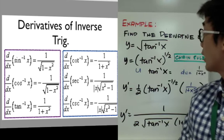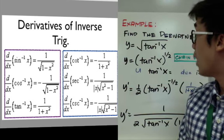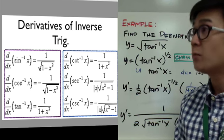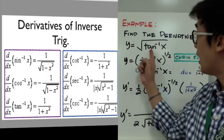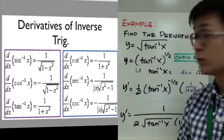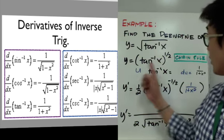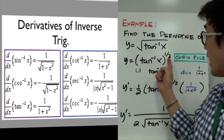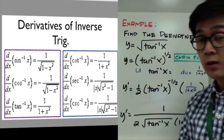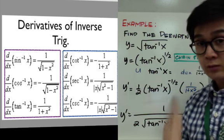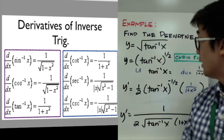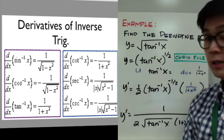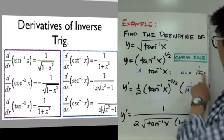In this case, we are going to find the derivative of y equals the square root of tan inverse x. Before we can use the formula, we always simplify the function into an exponential function so it's easier to derive. So the derivative of tan inverse of x raised to one half requires the chain rule. Here, u is tan inverse x, and the derivative of tan inverse x using the formula is 1 over 1 plus x squared.